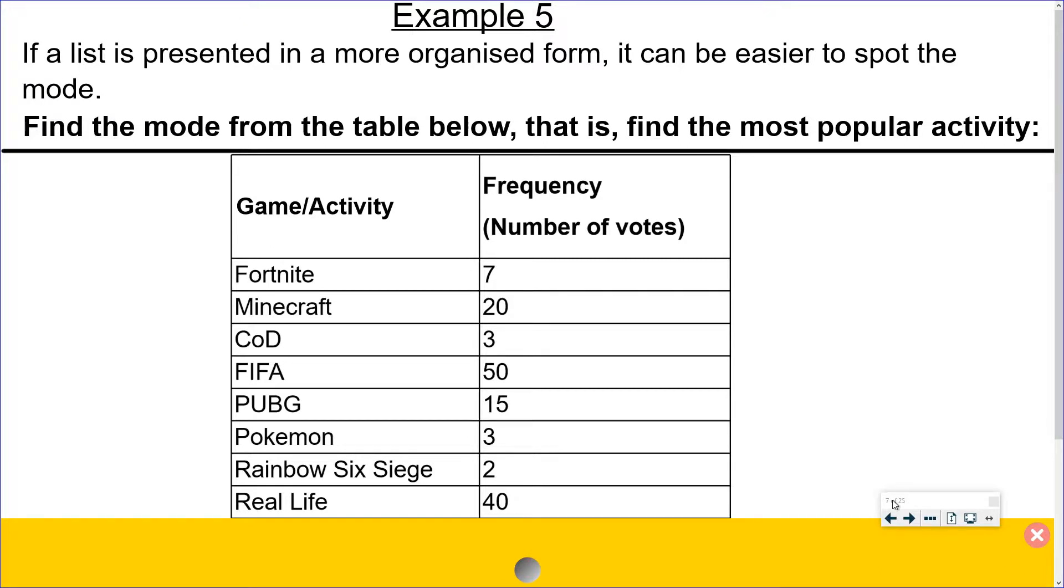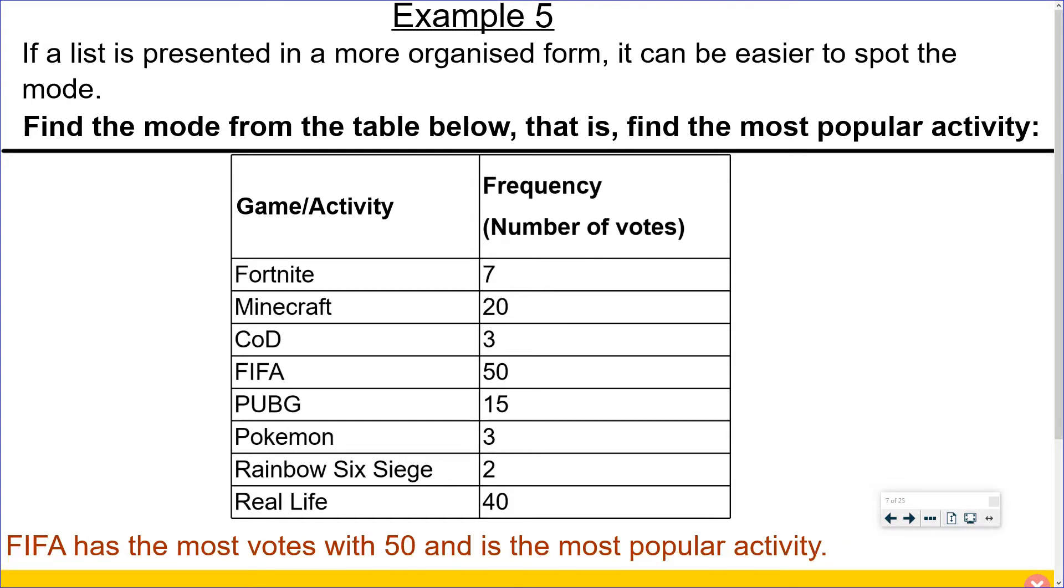Example 5. If a list is presented in a more organized form such as a table, it can be easier to spot the mode. So in this example find the mode from the table below, that is find the most popular activity. So on the left hand side we have activities, and on the right hand side we have the frequency of votes or the number of votes for each activity. So to work out the mode we just have to work out which has the most votes. So from this we see that FIFA has the most with 50. So we could say that FIFA is the modal activity or the most popular activity.